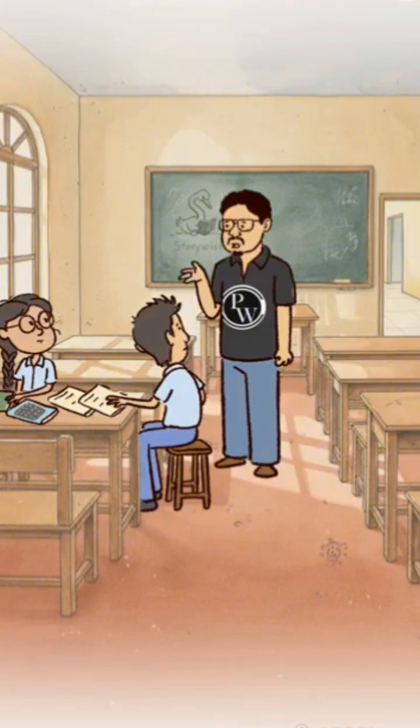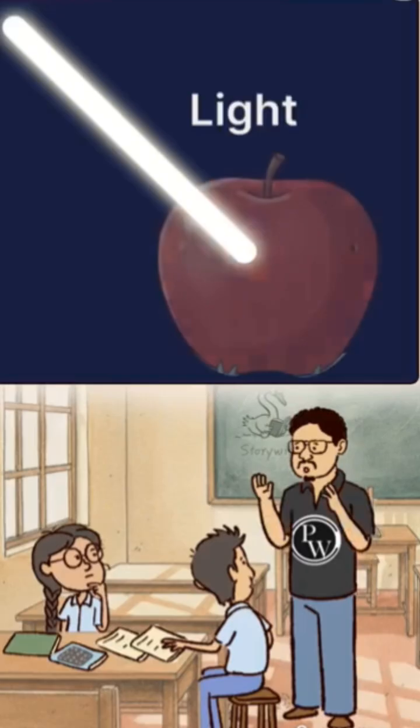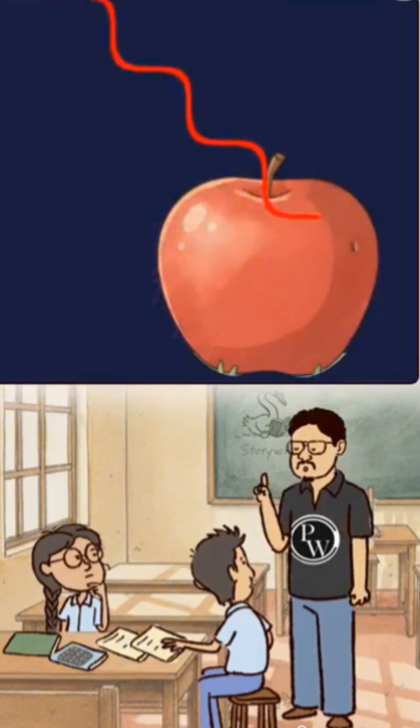Looks like you bunked modern physics class. Colors appear because of light. When light hits an object, some wavelengths are absorbed and some are reflected.